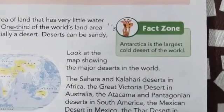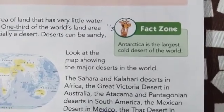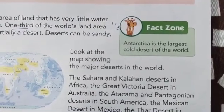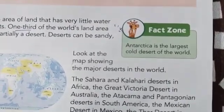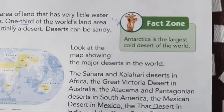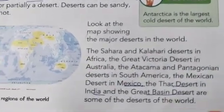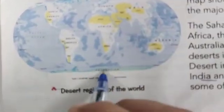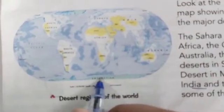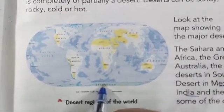Do you know which is the largest cold desert of the world? The answer is Antarctica. Antarctica is the largest cold desert of the world, and looking at the map, it is located at the southernmost point of the globe.